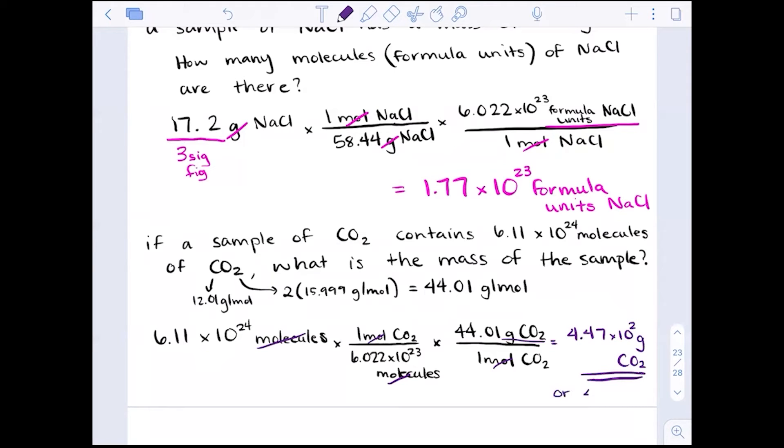4.47 times 10 to the 2 grams of CO2. You could also put that in non-scientific notation, 447 grams. Either one is appropriate, three sig figs though because of our given measured value.